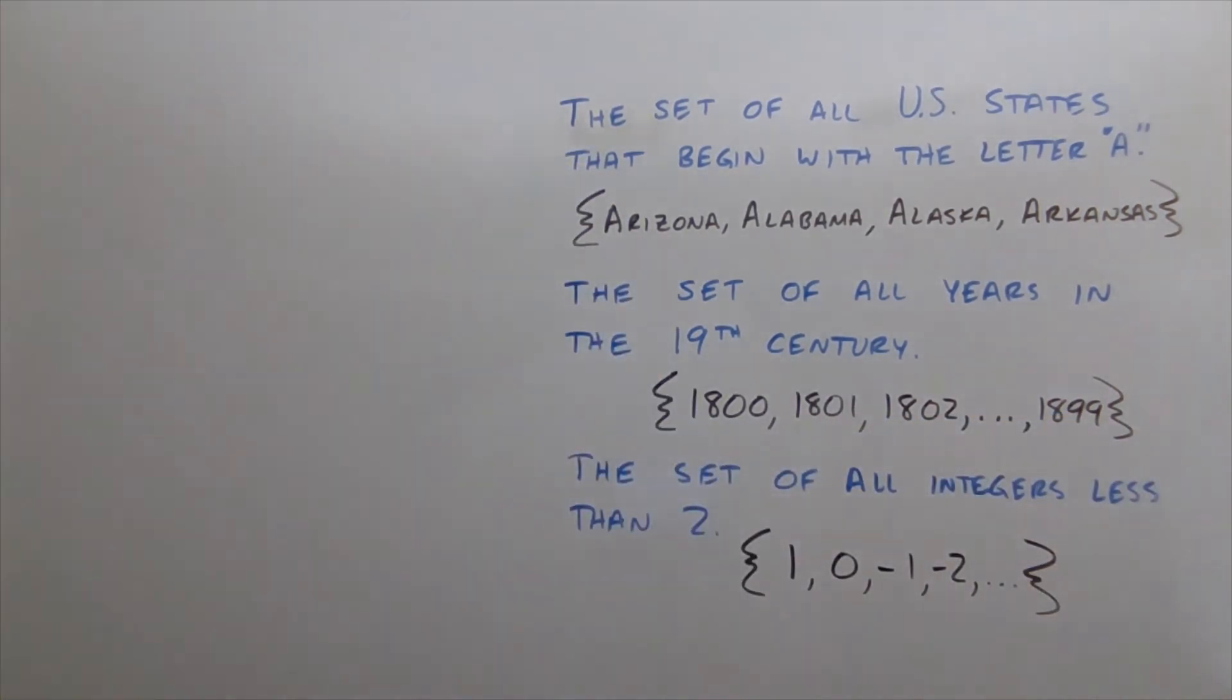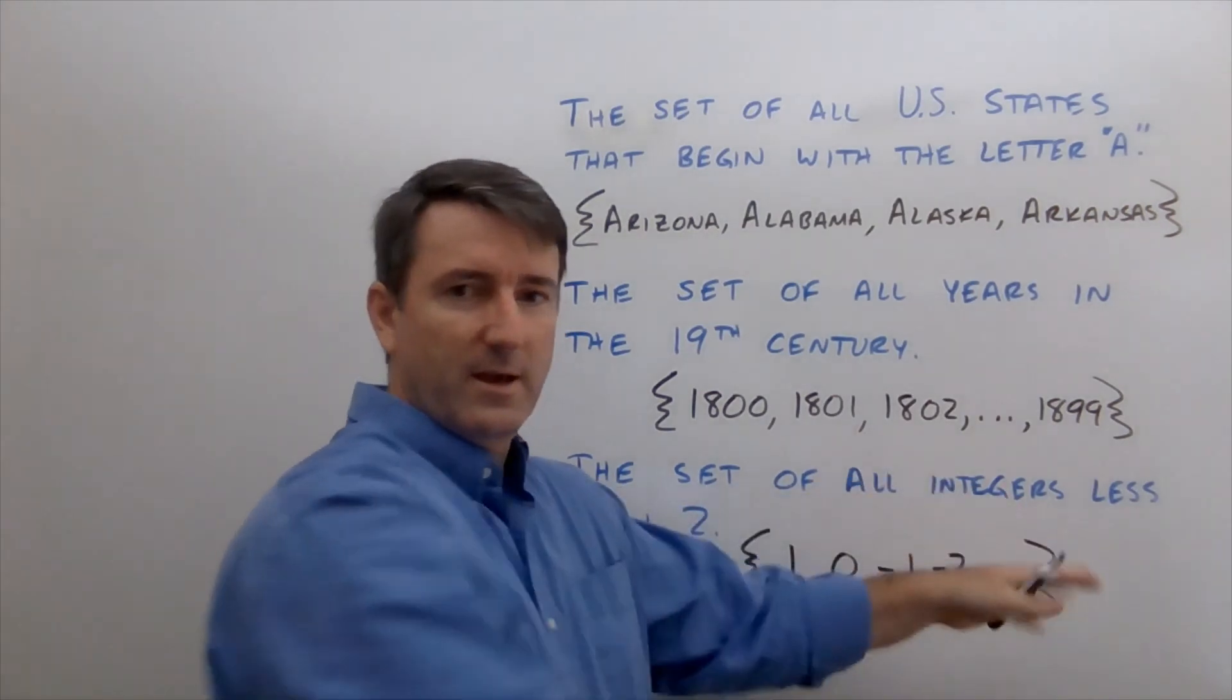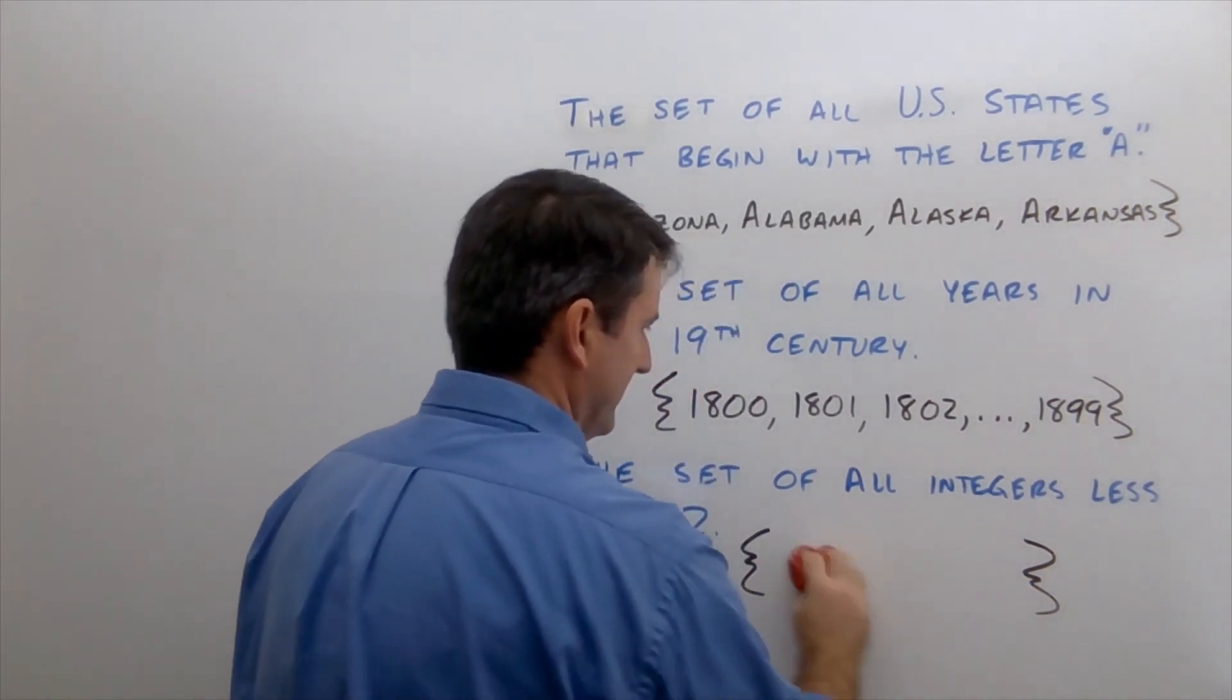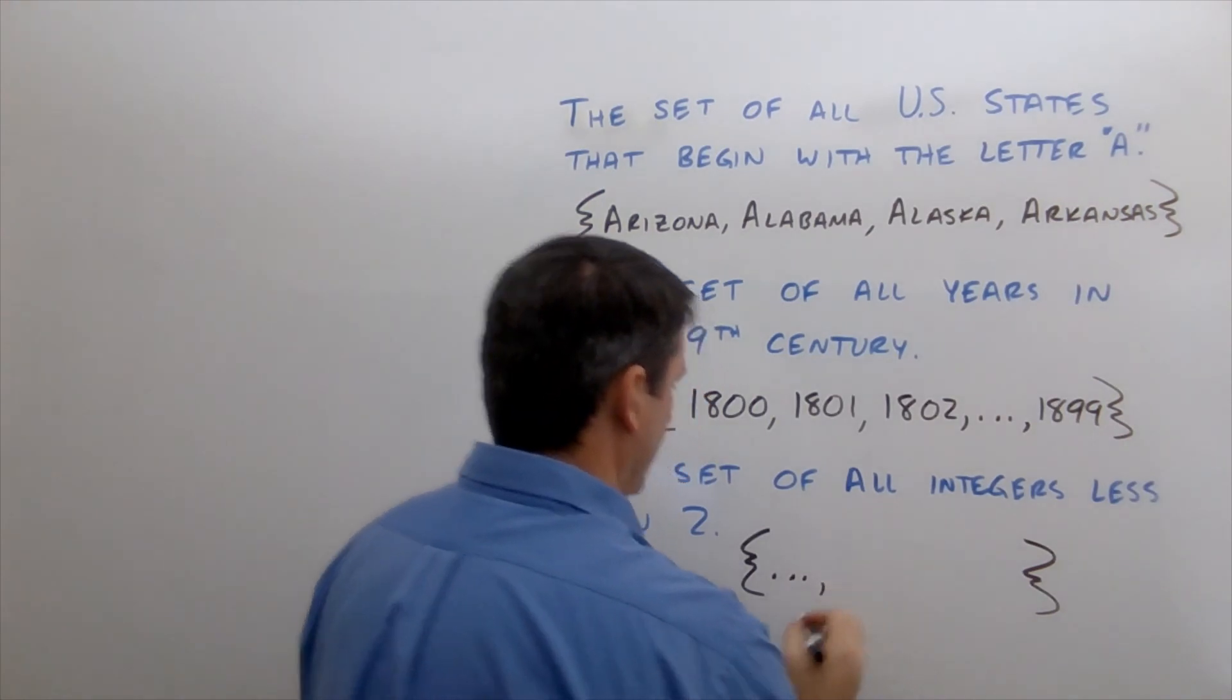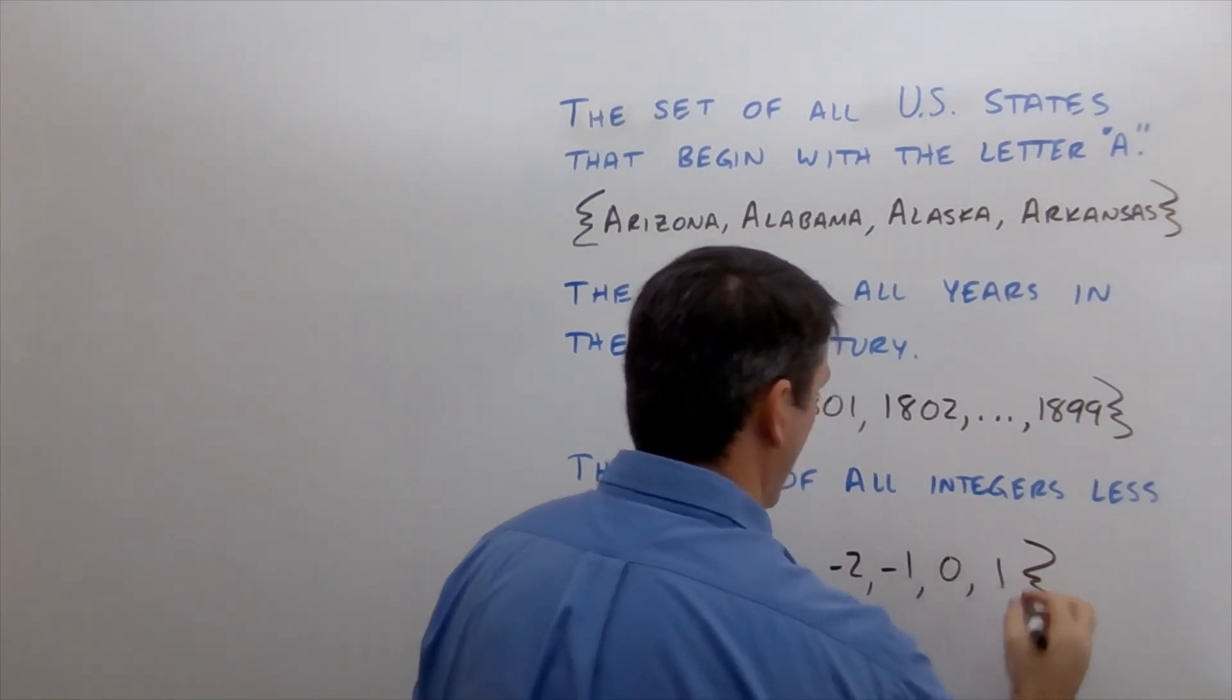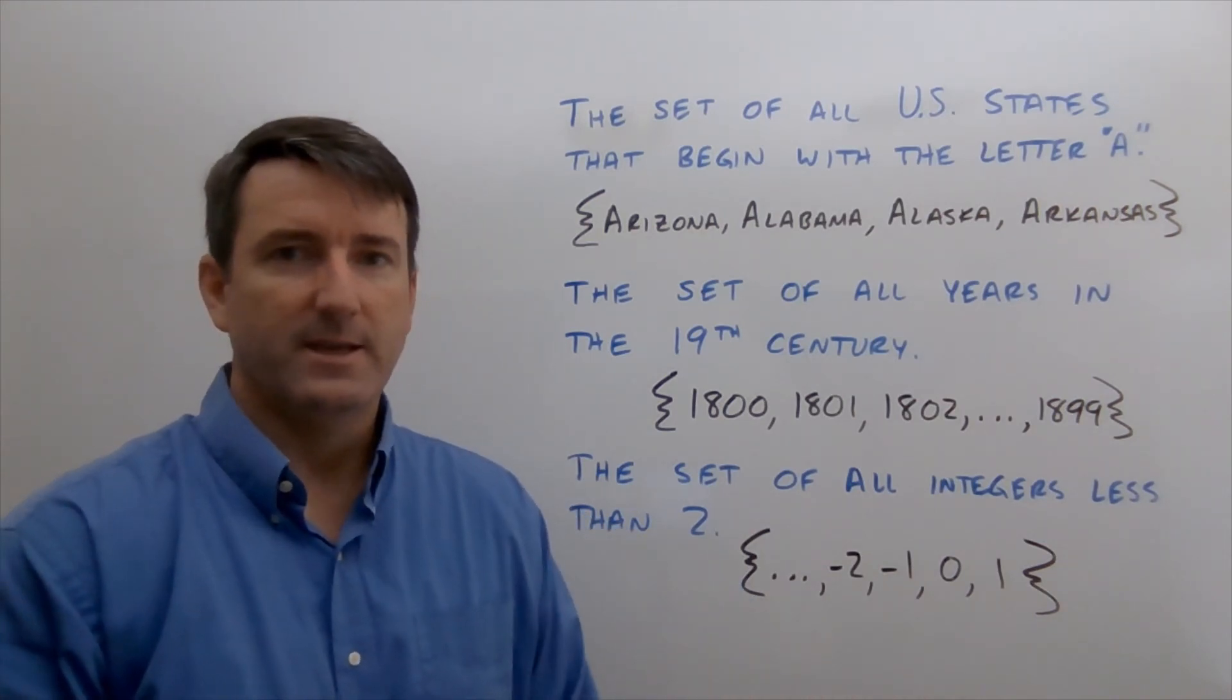Now, usually we write numbers from left to right going from smallest to greatest. And so another way that we could write this would be to put the ellipsis in the front and then negative two, negative one, zero, and one would be the largest number in this set. Either way is acceptable.